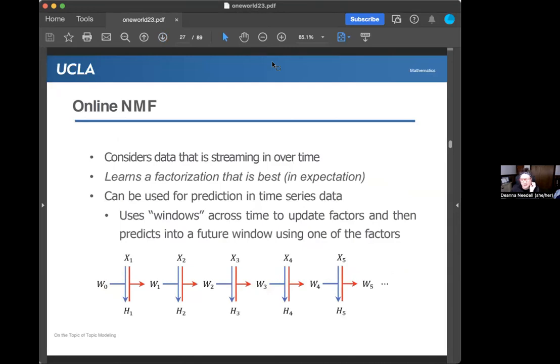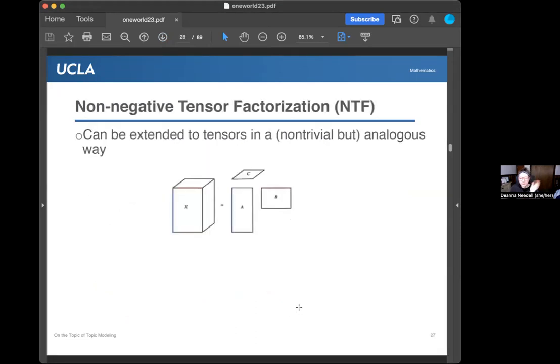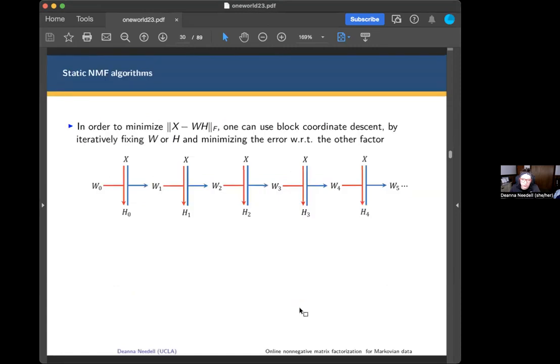There's also an online version of this. Instead of having a fixed data matrix and learning a factorization, you might have streaming data that comes in over time. The goal here will be to learn a factorization that is best in expectation if we assume some stochastic model on the data. This can be used for prediction as well. The high level idea is if you can learn these factorizations at each time step over some window, then you can imagine sliding your window into the future and whatever factorization you learn into the future gives you a prediction. I'll briefly mention that everything I'm saying today applies to tensors as well in a non-trivial but analogous way. I'll keep most examples in the matrix world because it's easier to write down and understand.